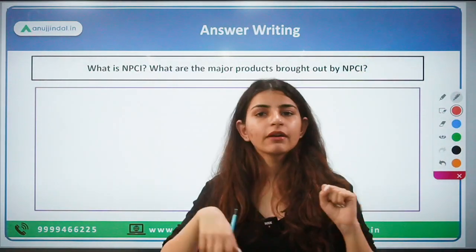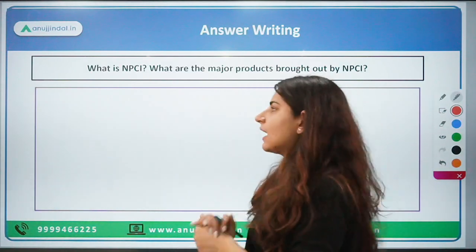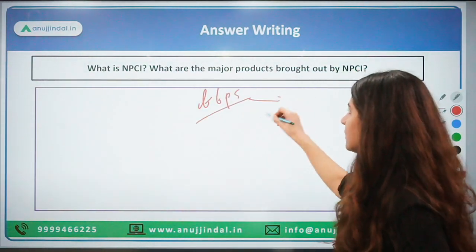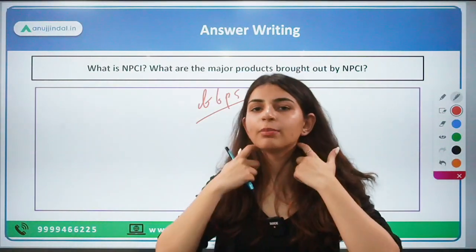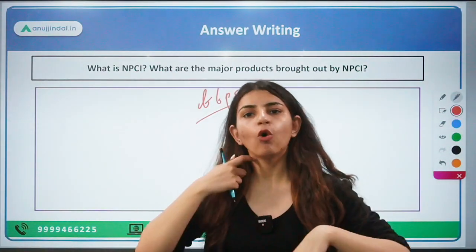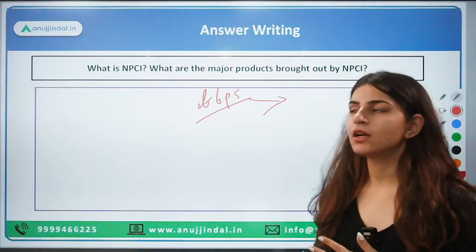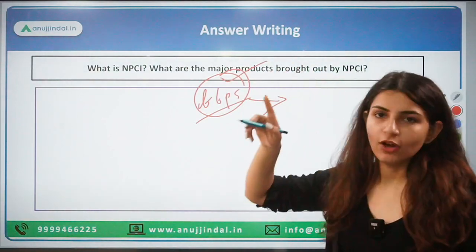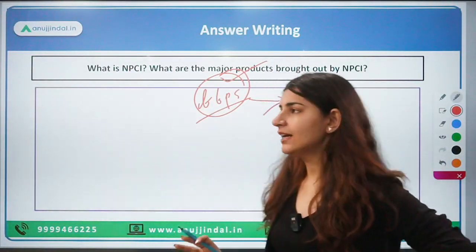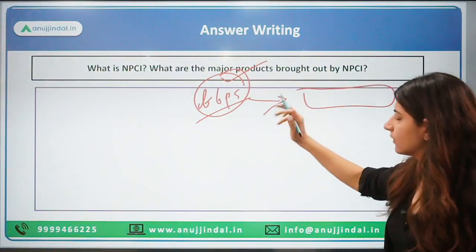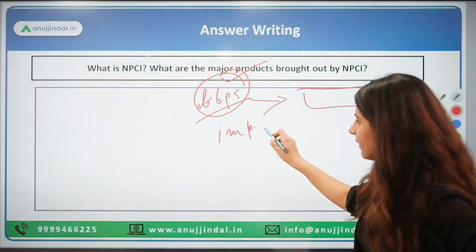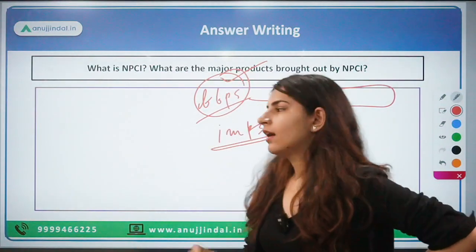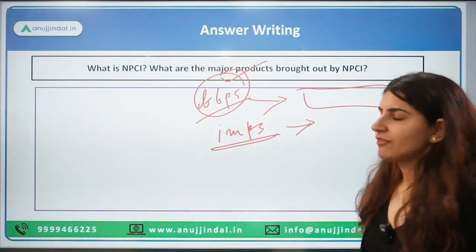Once you have mapped in your brain which products to cover, you can write them on a rough sheet and then start answering. First, Bharat Bill Payment System — it is a one-stop platform wherein all bill payments can be made by the user. Then IMPS — Immediate Payment System — a 24/7, 365-days payment mechanism enabling immediate interbank transactions.